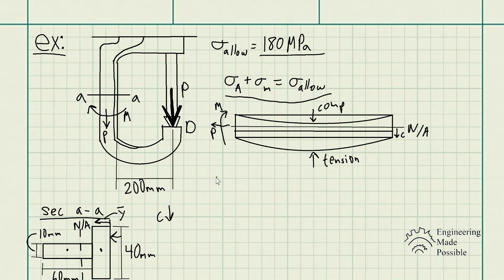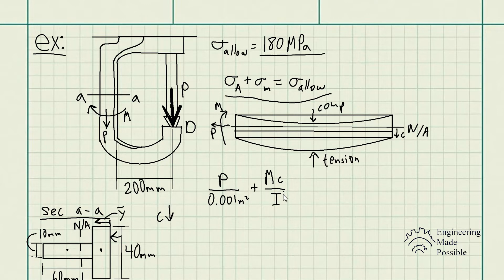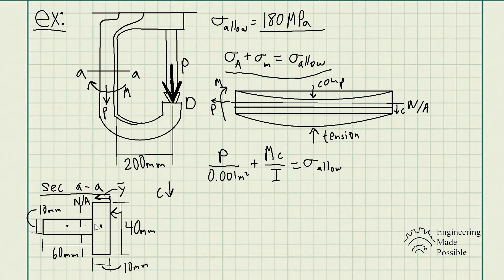For the axial stress, let's write it out in variable form since we are solving for P: we have P divided by the cross-sectional area, which is 0.001 meters squared, plus the bending moment times C divided by the moment of inertia — using the parallel axis theorem since it's a composite area — and this is equivalent to the allowable axial stress given. When it comes to the moment, it's going to be P times the distance from where P is applied to the neutral axis of the cross-sectional area.